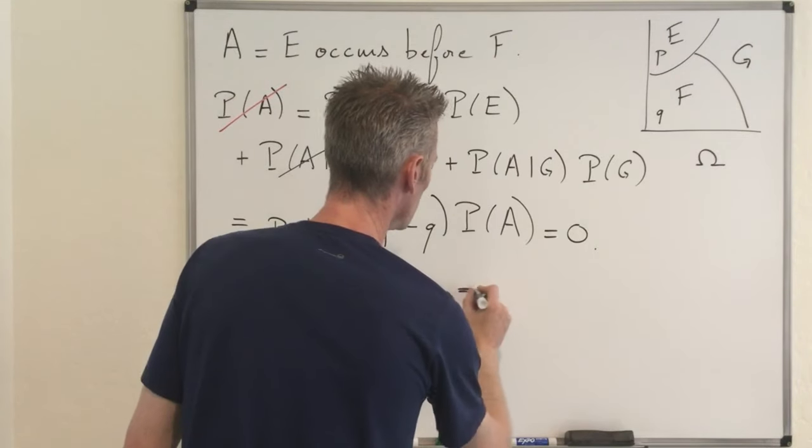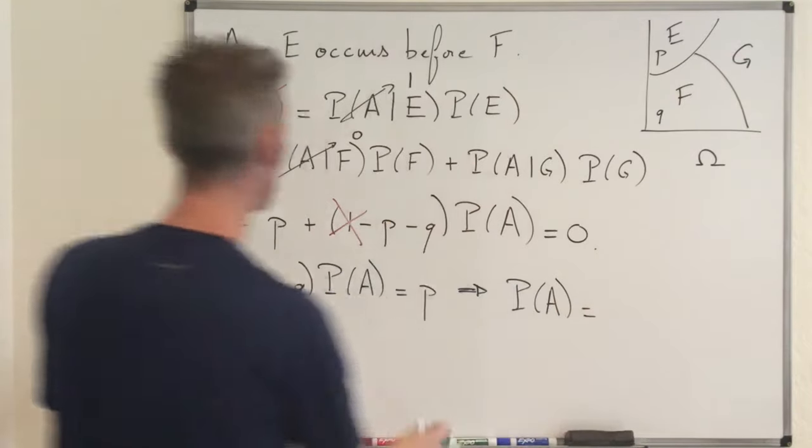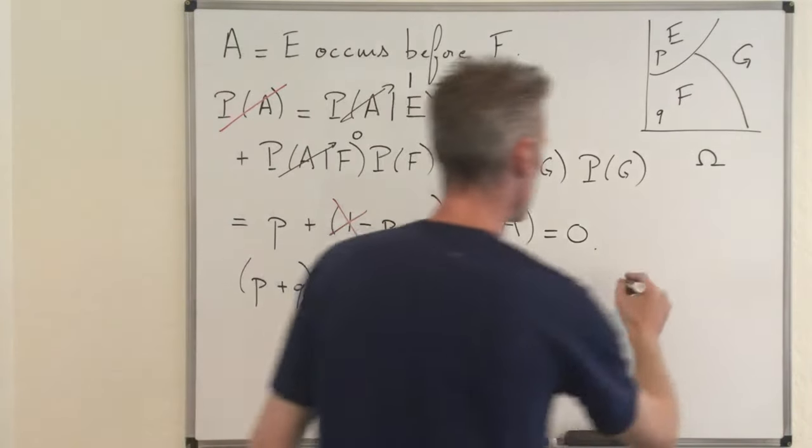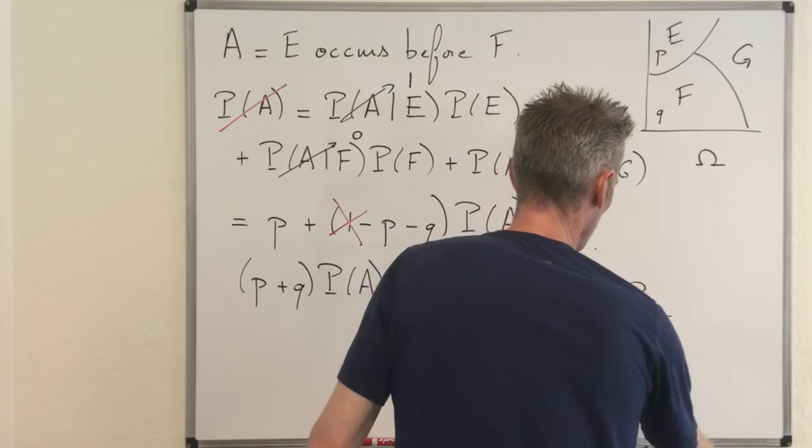So this becomes wrong because I just simplified it but without touching this one. But then we have that this expression here, the last one should be equal to zero. And then that tells you clearly that P plus Q times P of A is equal to P. And then from that, you conclude that P of A is equal to P divided by P plus Q.